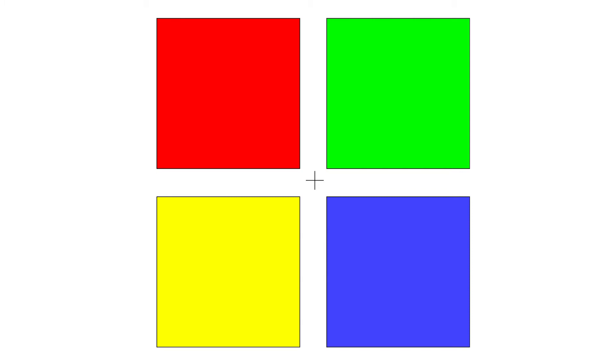The first trick I want to show you: look at the screen and stare at the little cross in the middle of this pattern. Keep staring at it for about 20 seconds. Okay, what do you see? Can you see those pastel colours and shades? It's really strong, isn't it? But if you look away, you'll see that those four squares are just completely blank and white. You look back and then you'll see those lovely coloured shades.